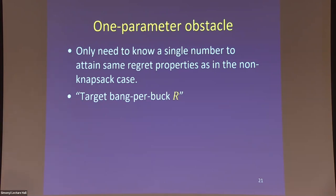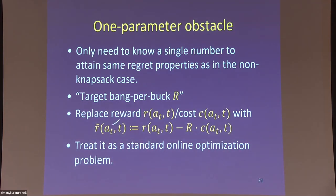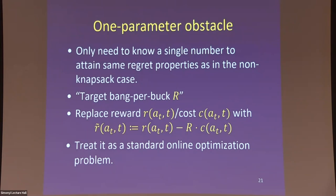It turns out the obstacle is a one-parameter obstacle. If someone told you the bang-per-buck r — the ratio between units of weight and units of reward for the best strategy in hindsight — you could replace reward and cost with that linear expression and run standard low-regret algorithms, recovering all the wonderful results from standard optimization. So it's a one-parameter evil problem, but it is an evil problem.